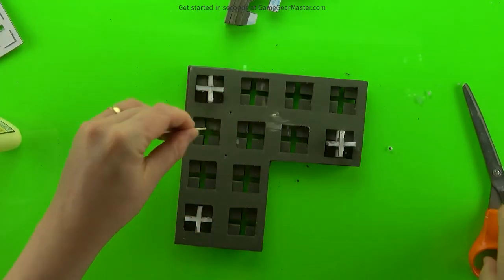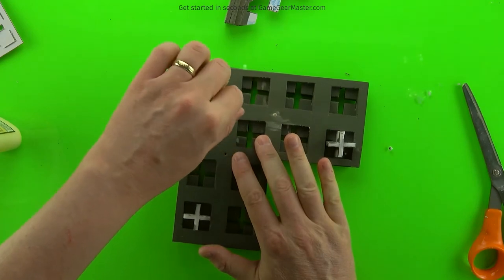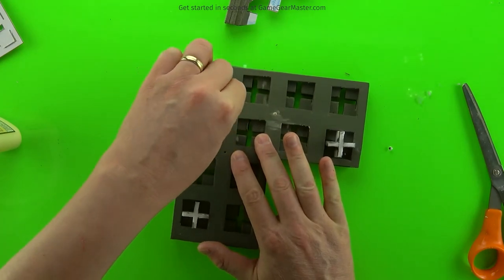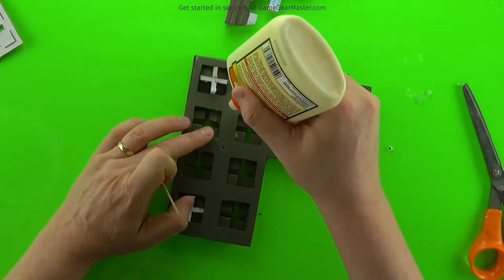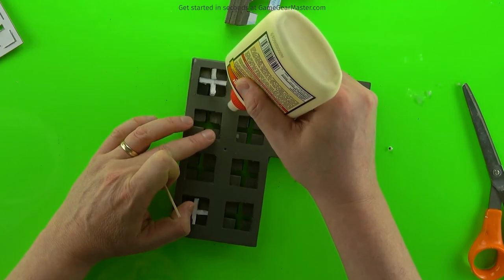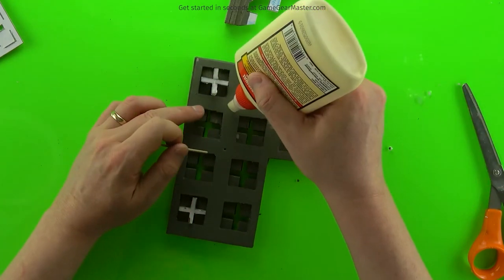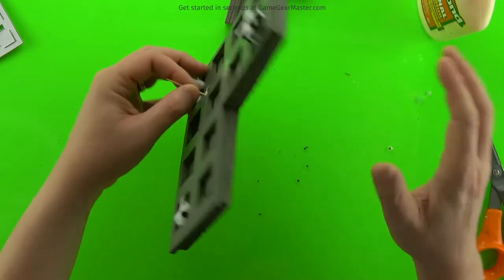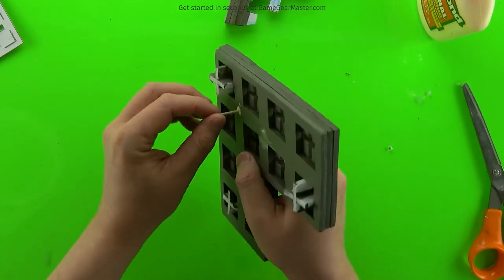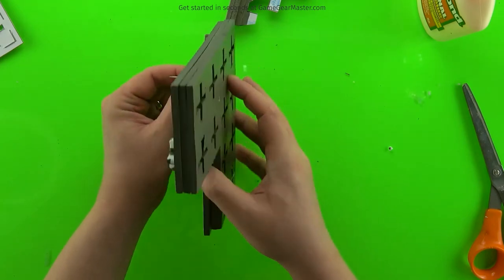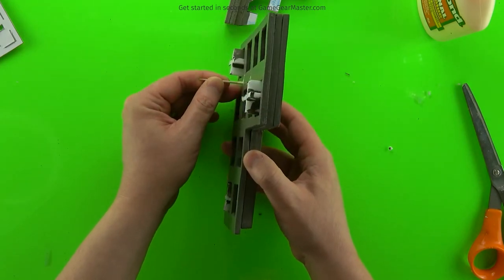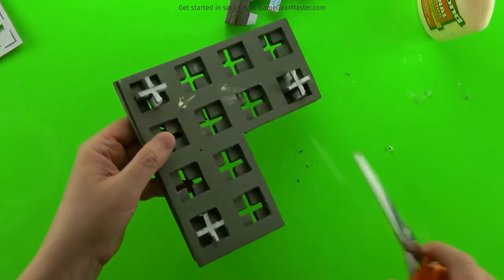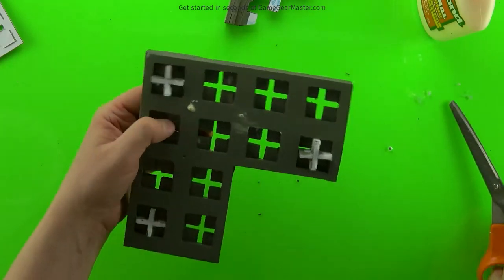Then cut off one end of the toothpick so it doesn't have a point on it anymore. Test fit a little bit, put some glue into the hole, and put the toothpick in all the way to the bottom.